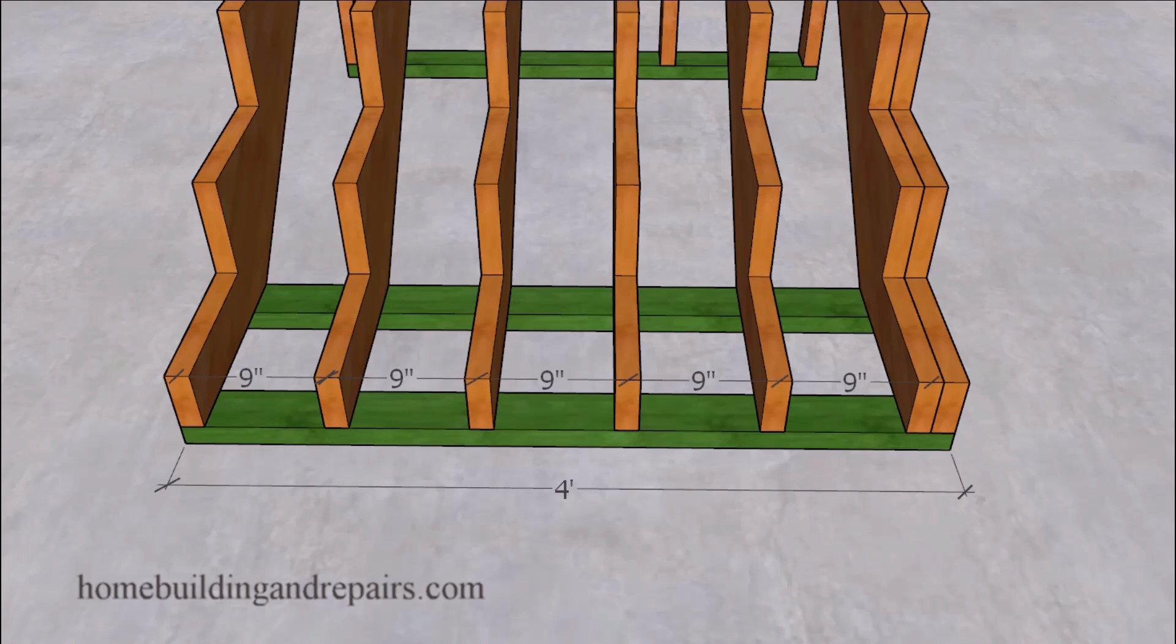So let's start with something I found on the internet. This information might change over time, but for now, I found one that required a maximum stair stringer spacing of nine inches on center. For a four-foot wide stairway, you're going to have to install seven stair stringers.